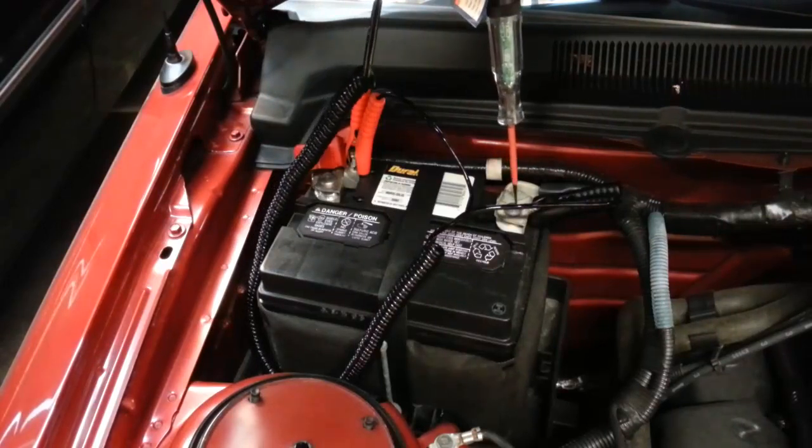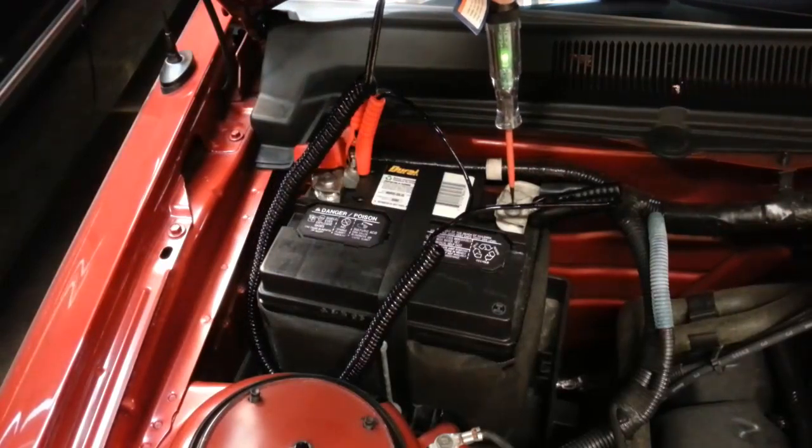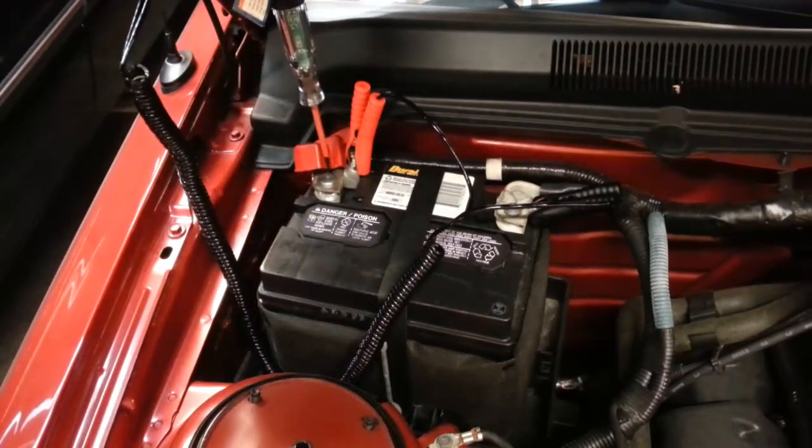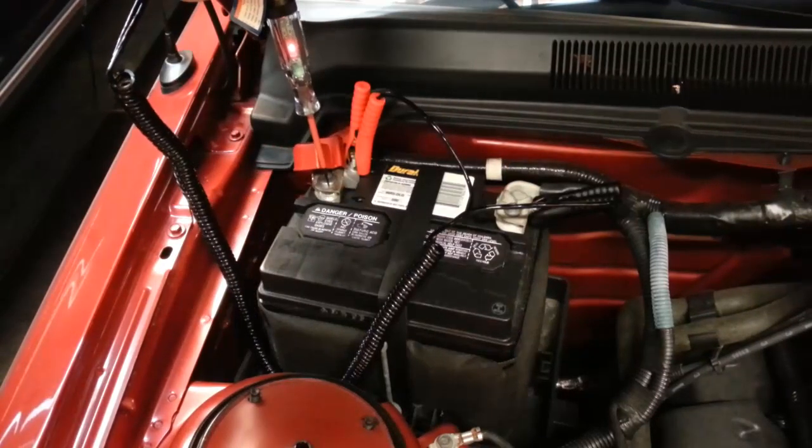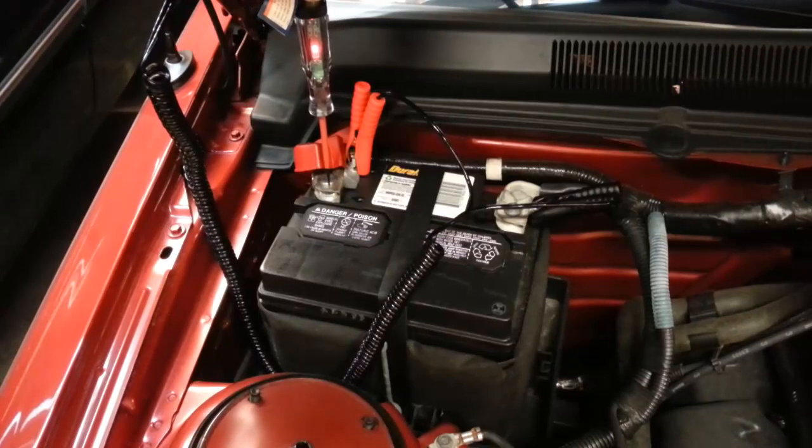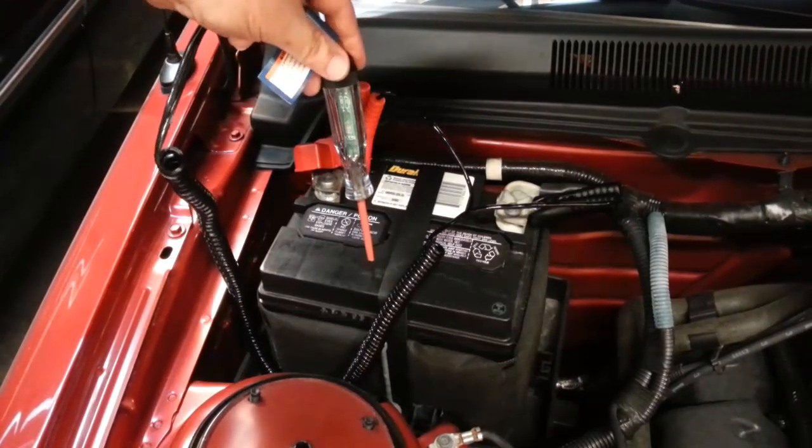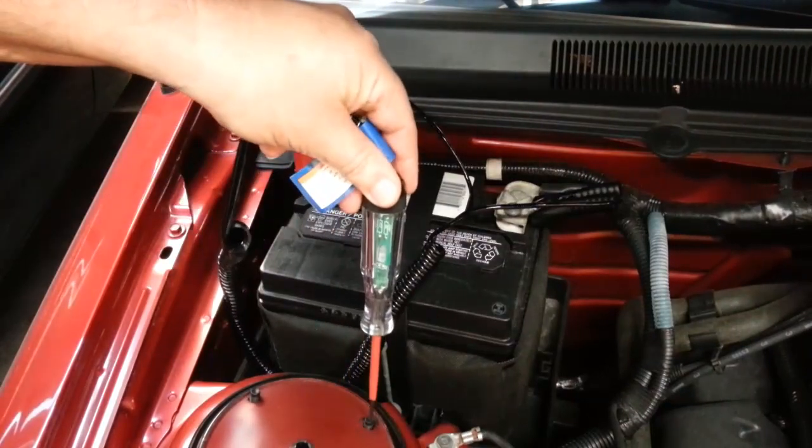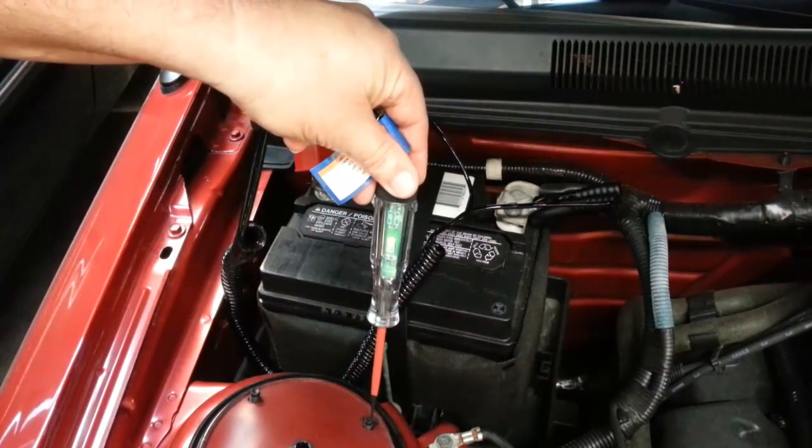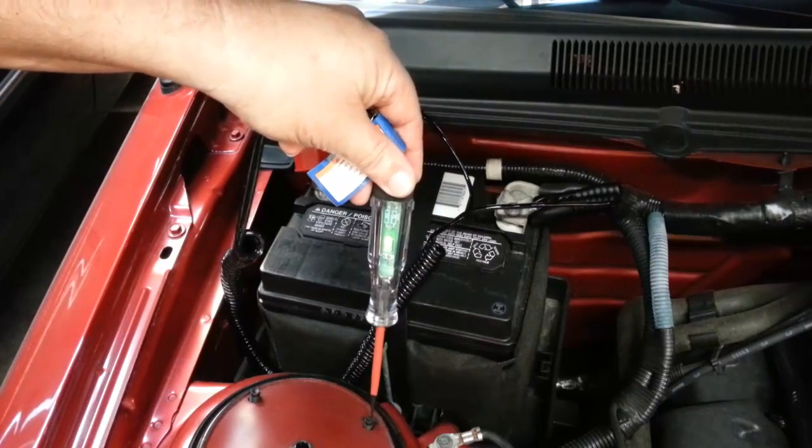So when you hook it up right here to the negative, you can see you get a green light telling you that is the ground or negative. Hook it up to the positive, you get a red light telling you that is the power terminal. Whatever you're touching is producing power. You touch it somewhere else, you get nothing at all, like right here for example. It's the body so it's grounded, so you get green.